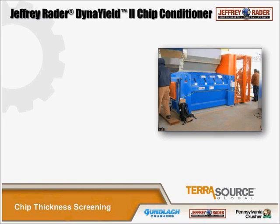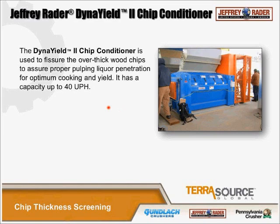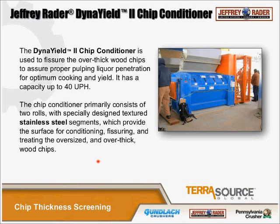For overthick chips, we like to condition them. The Dyna yield chip conditioner takes the overthick chips and conditions them by running the chips between two pyramid-profiled rolls to allow the chips to absorb liquor better. It consists primarily of two rolls with specially designed stainless steel segments that provide conditioning, fissuring, and treating of oversize and overthick wood chips. Sometimes you can put a chip the size of a coffee cup through, and when it comes out it still looks like a coffee cup, but it's fissured such that liquor will definitely penetrate into the fiber.